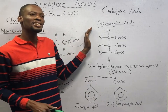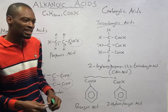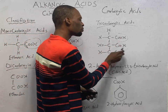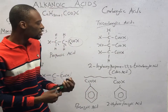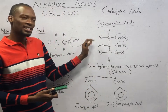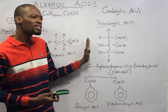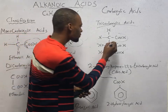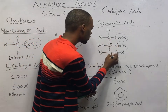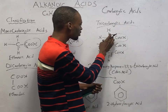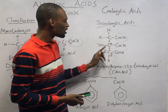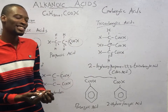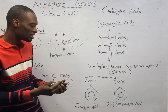Tricarboxylic acids are carboxylic acids having three carboxyl groups. An example is citric acid. The IUPAC name for citric acid is 2-hydroxypropane-1,2,3-tricarboxylic acid, so it is a tricarboxylic acid.